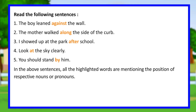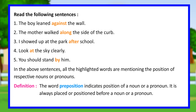In the above sentences, all the highlighted words are mentioning the position of respective nouns or pronouns. Definition: The word preposition indicates position of a noun or a pronoun. It is always placed or positioned before a noun or a pronoun.